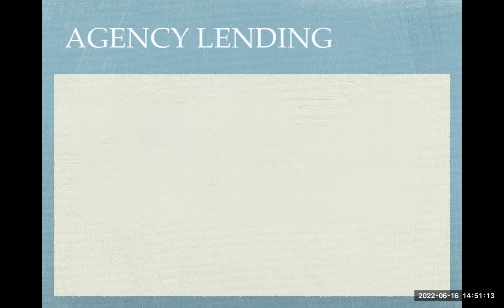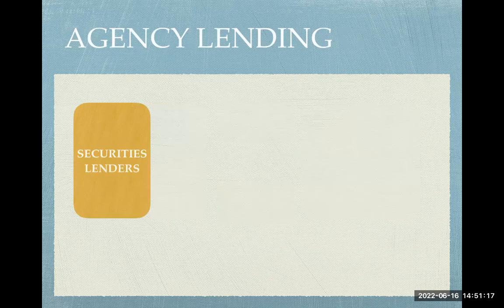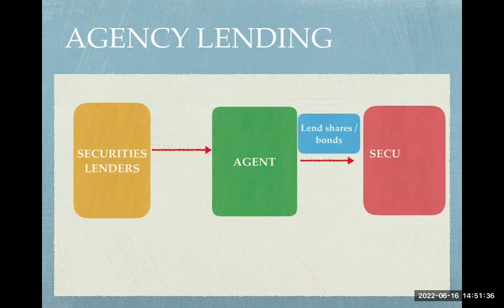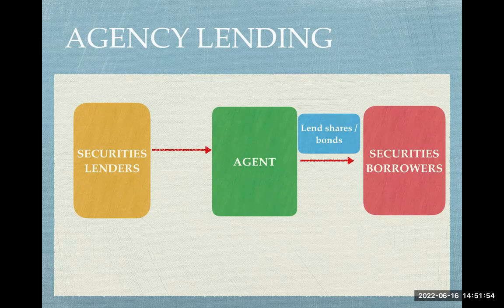Most of the activity, however, is driven by agents — this is called agency lending. In agency lending, the securities lenders lend to an agent, and the agent then lends the shares and bonds to multiple borrowers — securities borrowers A, B, C, D, and so on. The agent decides how to distribute the pool of lent securities across different types of borrowers. A single agent can serve many different borrowers, making the smooth transfer of securities from lender to borrower possible.